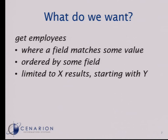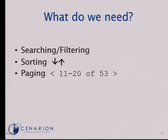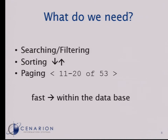What do we want? We want to get all those employees that somehow match our search value, order that list by some field, and limit the result — say, results 11 to 20 from all employees. We call those operations searching and filtering. By searching I mean you enter some text and filter by it. Filtering is when you have predefined values, like a combo box for gender. We also want to sort, and we have a pager to browse through those elements.